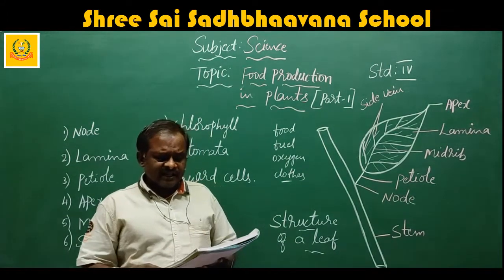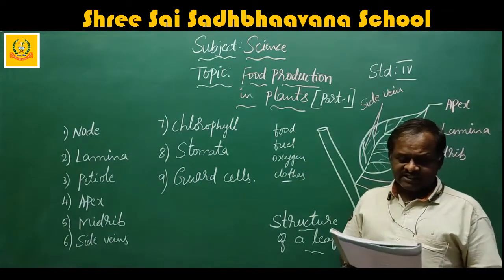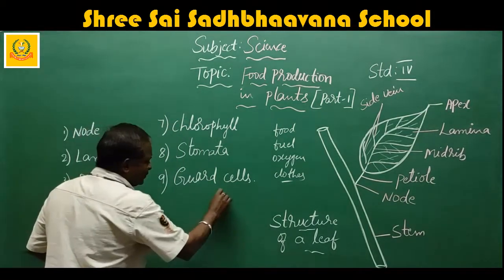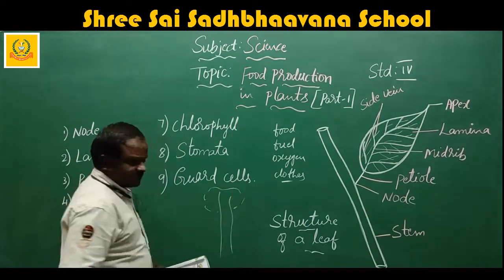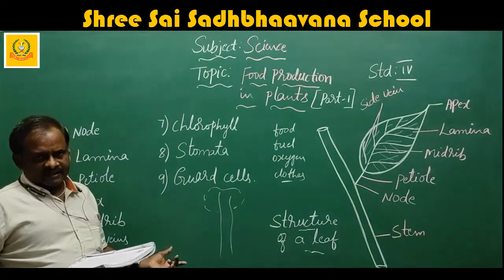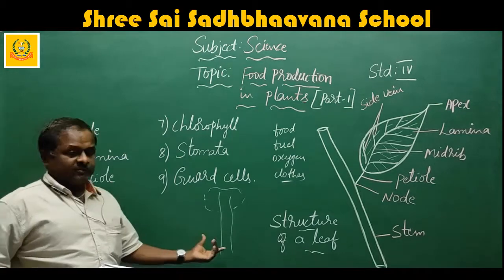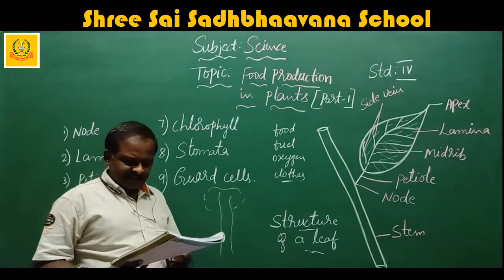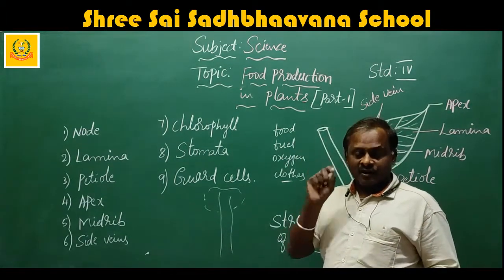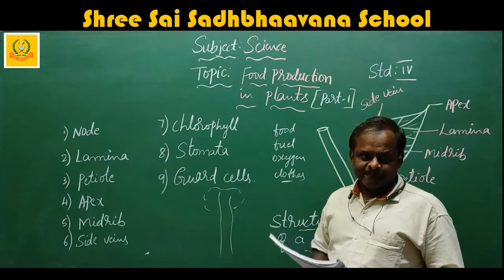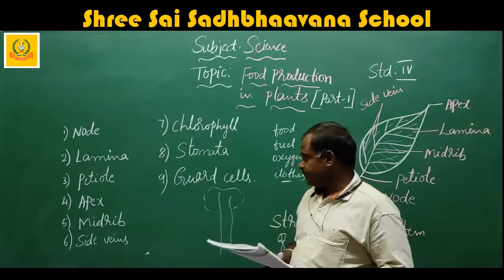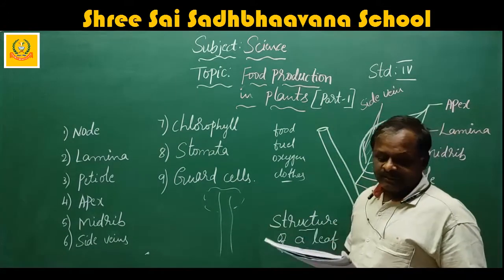Plants range from very small green planktons in the sea to huge coniferous trees in the hilly region — that means there is a wide range in plants, from the very smallest to the biggest trees. But all plants have a common feature: they produce their own food. They don't depend on anything else; they prepare their own food in the presence of sunlight.